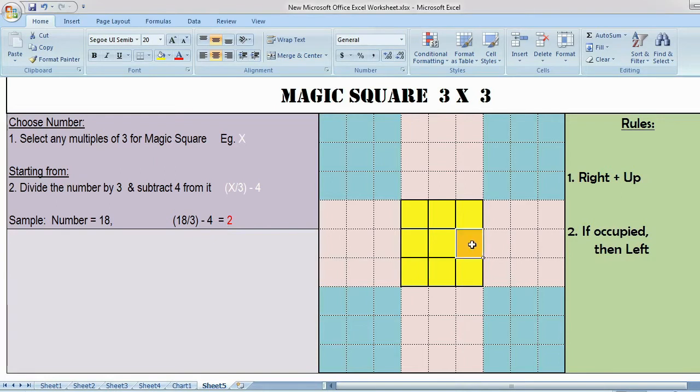You have to key in 2 here. The key rule is right plus up. This is the position I have to place 3, but this is an imaginary box. You have to match with the original box. This position matches with the main box here. I am placing 3 here.